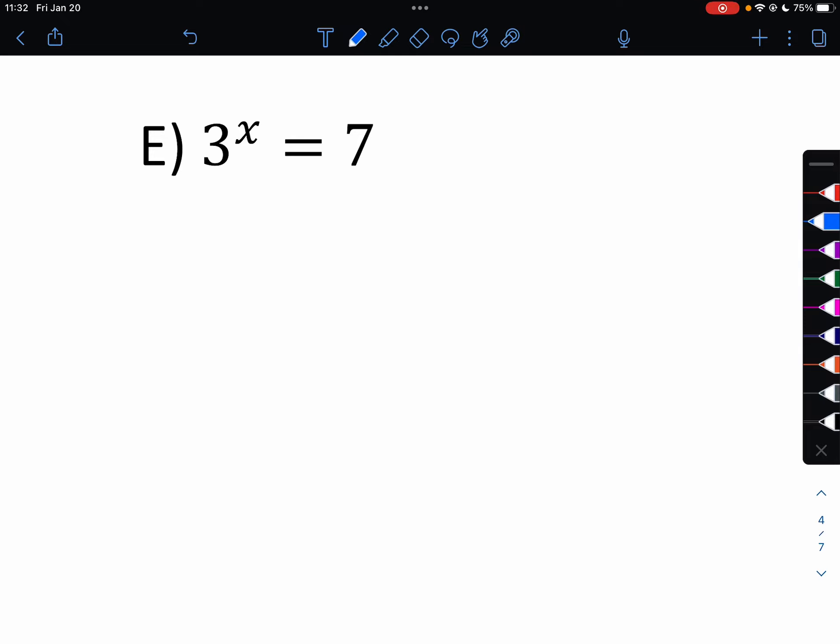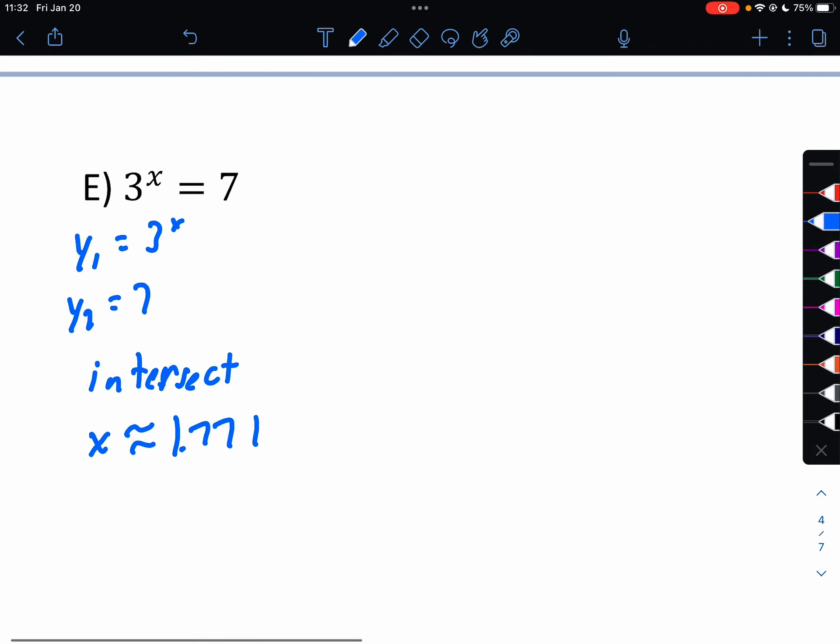And you could put 3 to the x in y1 and 7 in y2. And on the graph, see where they intersect, which will occur one time. So I'm just finding it right now in my calculator by doing second trace intersection. And the answer would be 1.771. Okay, so what I did again was y1 equals 3x, y2 equals 7. Find the intersection point. We will learn an analytic method with logarithms soon.